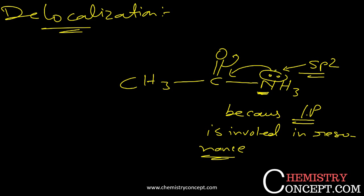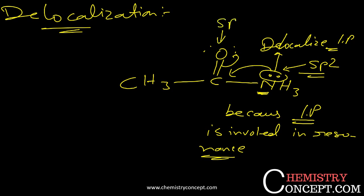So this lone pair is known as delocalized. Here also there are two electrons — two pairs of electrons — and this is also delocalizing. The oxygen is sp2 hybridized and the nitrogen is also sp2 hybridized, so this kind of molecule will show resonance.